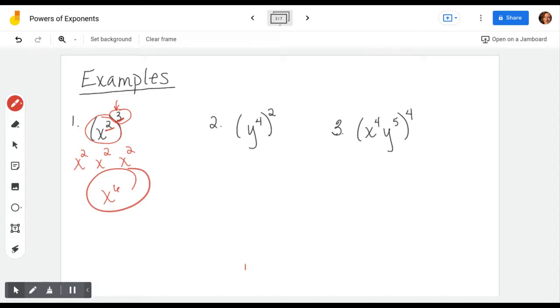Number two, really fast: keep the y, multiply the exponents, 4 times 2 is 8. If you want to write them all out you've got y to the fourth and y to the fourth, 4 y's and 4 y's all together would be 8 y's. But why go through all that?